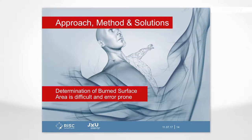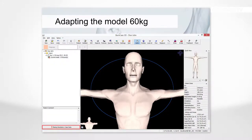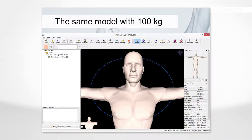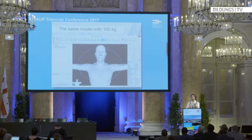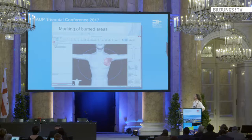Our approach is a three-dimensional one, providing a simulated patient adapted to the real patient. You can see the 3D model where you can enter burn injuries. When a doctor says the patient weighs 100 kilograms, not 60, we created algorithms to expand those models pragmatically. There's no time for a 3D scanner — we know it can be more accurate, but that's not the right solution here. We needed just three parameters: height, weight, and age.